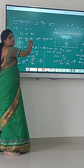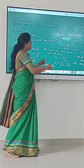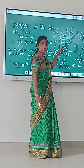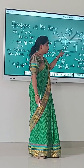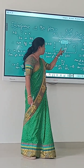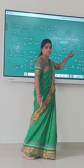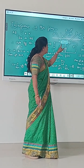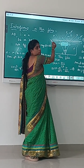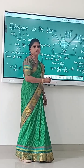Let us discuss interference in thin film. Here we are taking a thin film with a lower surface and upper surface of refractive index mu and thickness t. The light rays are coming from the source, which is incident on the upper surface of the thin film.